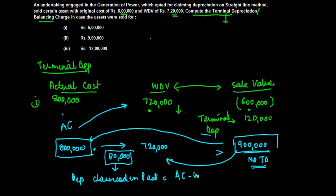Which is 8 lakh minus 7.2 lakh, 80,000. This is taxed as balancing charge. This is called actually as balancing charge which is taxed as business income.